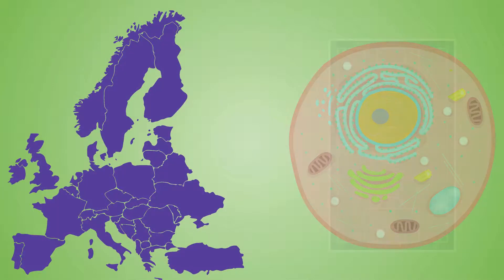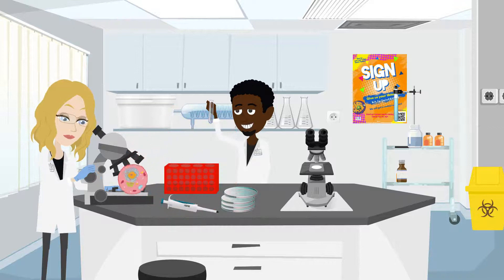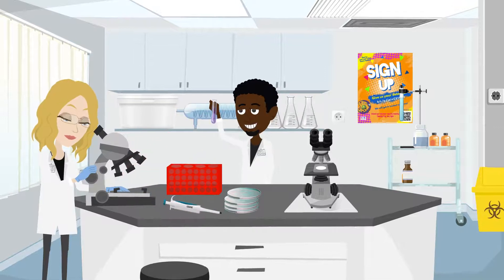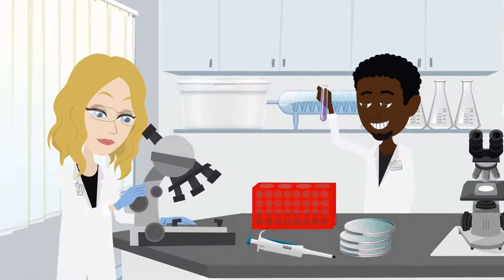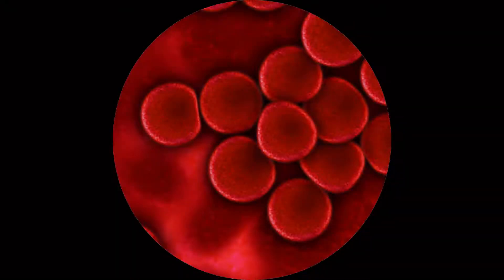If you were the size of Europe, a cell would be the size of a football pitch. Most cells are so small we cannot see them with our naked eye. Instead, we need a special instrument called a microscope to be able to see them.